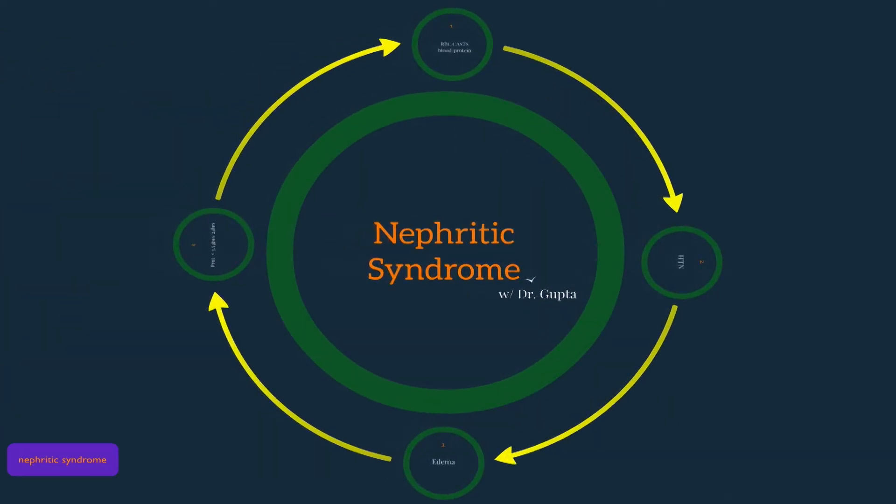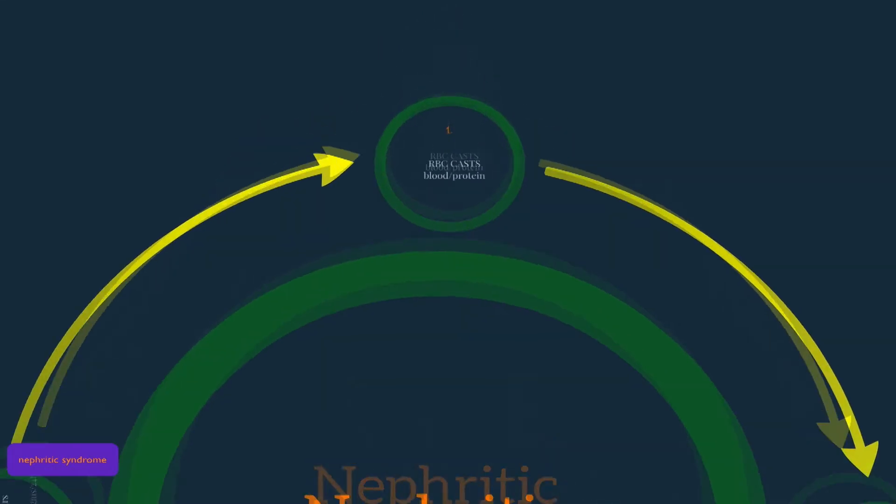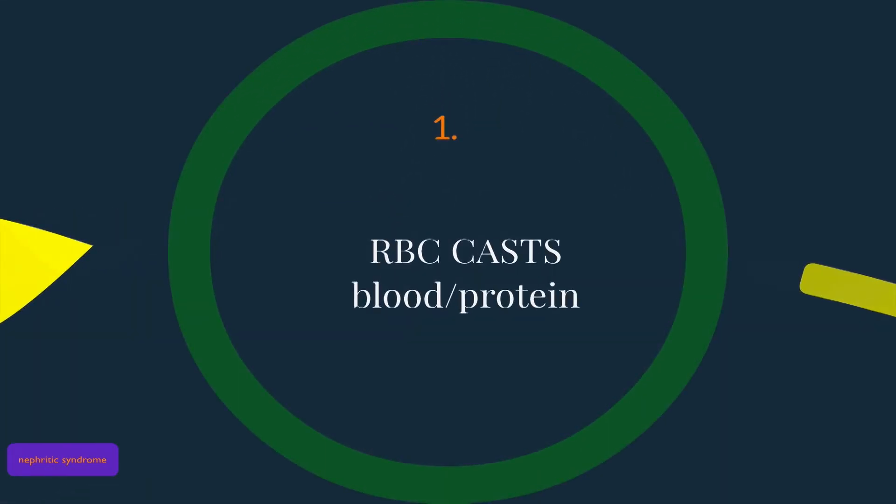Nephritic syndrome can be a confusing topic to understand, so let's break it down into manageable topics. The first is to understand what characterizes nephritic syndrome. Nephritic syndrome's hallmark is red blood cell casts.